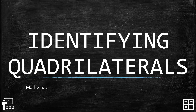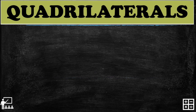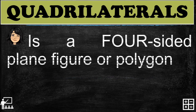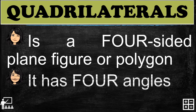This video lesson is about identifying quadrilaterals. A quadrilateral is a four-sided plane figure or polygon and it has four angles.